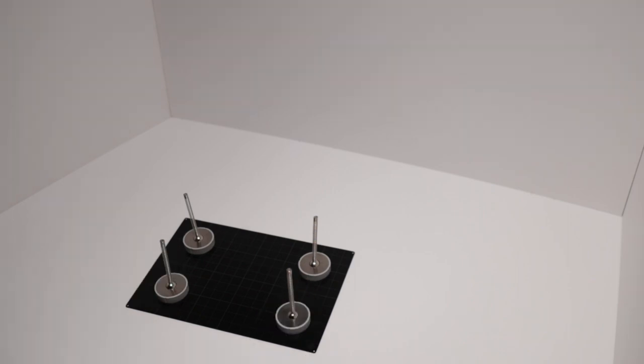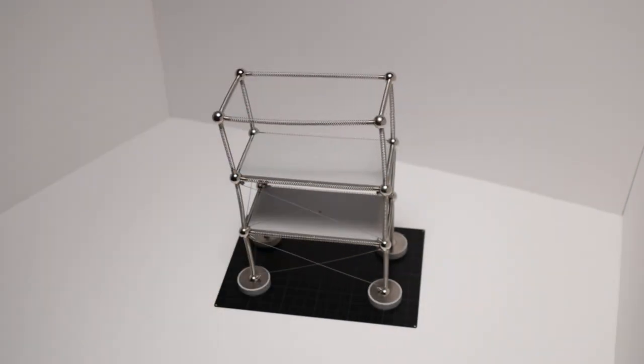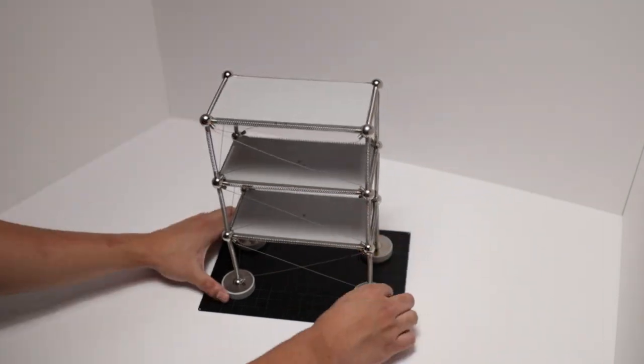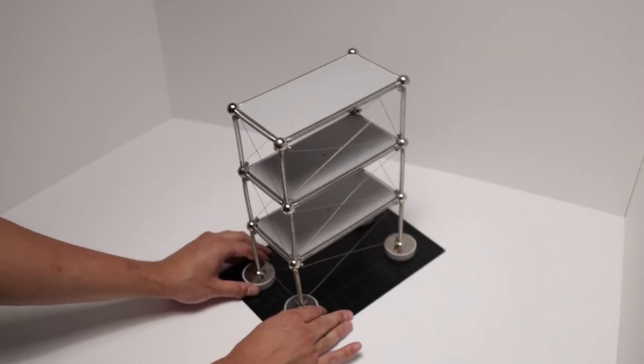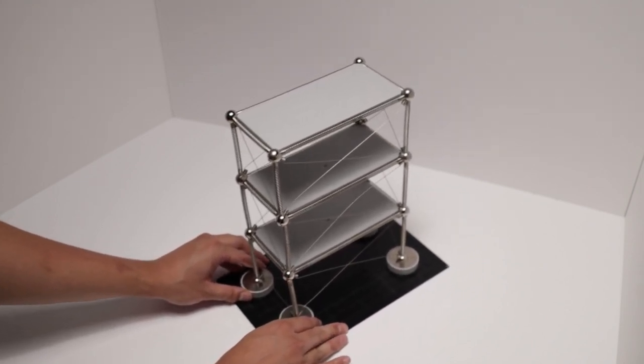Kit number one allows you to do the basic multi-story structure. What was really cool to me about it was that I could easily show some of the seismic effects such as building torsion and soft stories. For example, here we have a structure with braces on all four sides of it, so under seismic loads it works pretty well and it's stable.